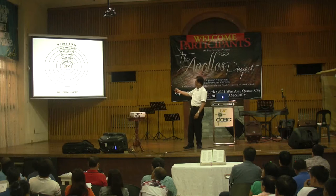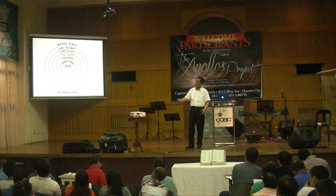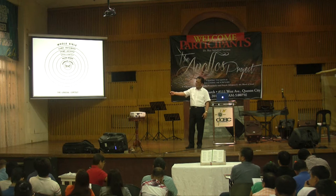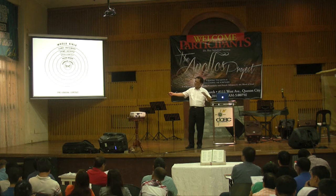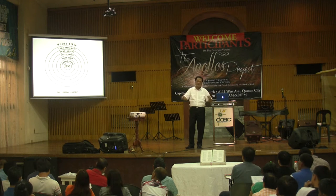Then you go to the major section — that can be the whole chapter, depending on the text. Then you have the book context, which is the whole book. Then you have the same author, the same testament, and then the whole Bible. We'll take this one by one.